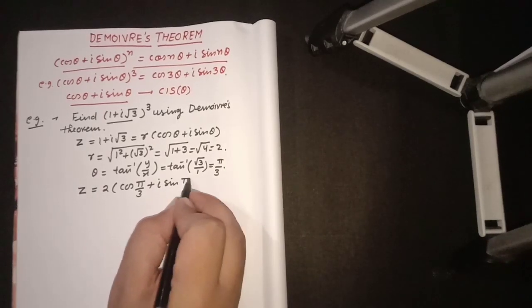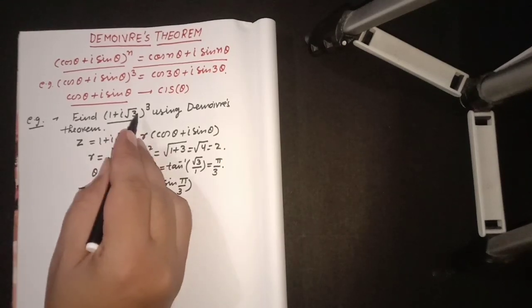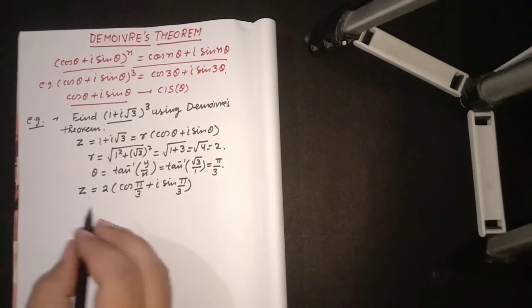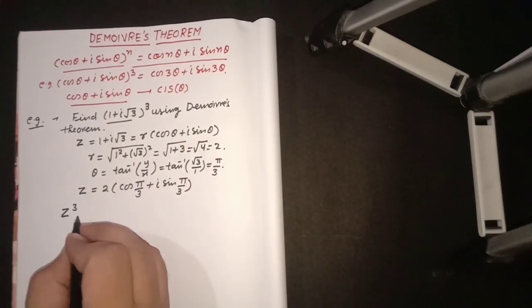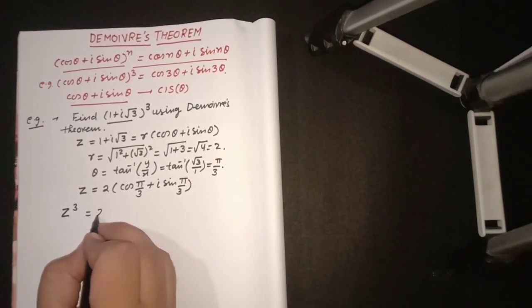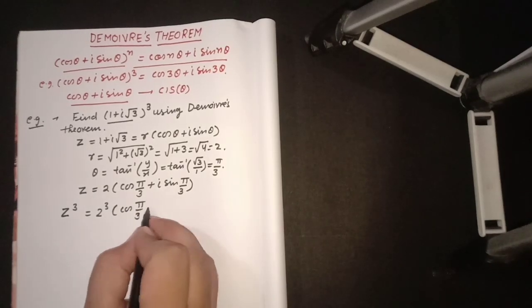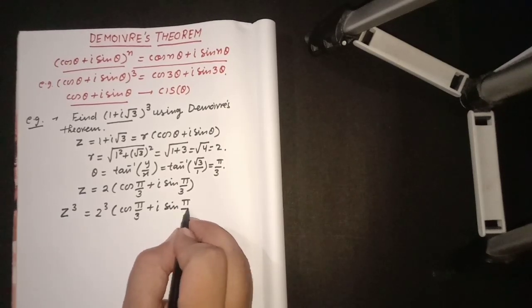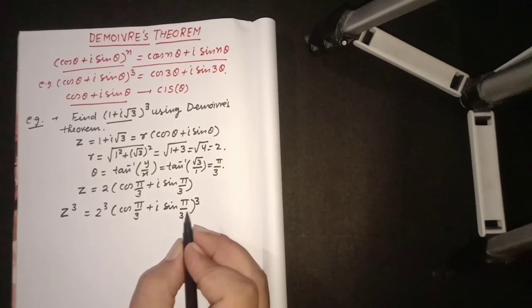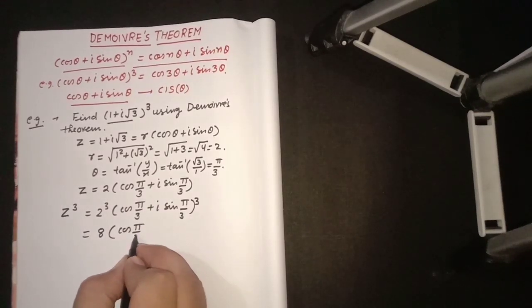Now you have to evaluate (1 + i√3) whole cube. So for that we have to use DeMoivre's theorem. z³ will come out: [2(cos π/3 + i sin π/3)]³. That will come out 8(cos π/3 + i sin π/3) whole power 3.